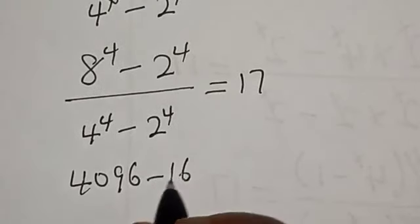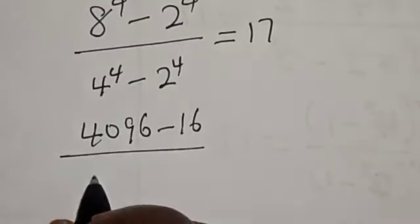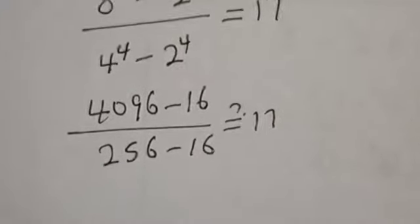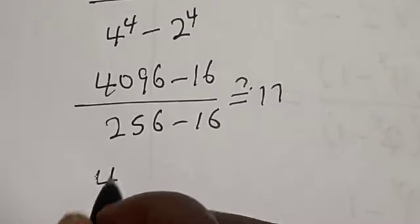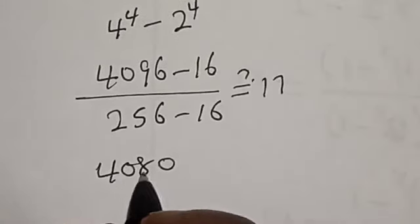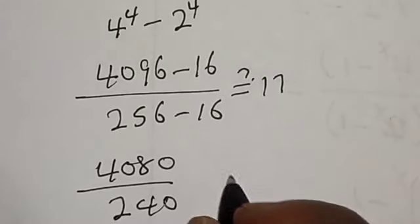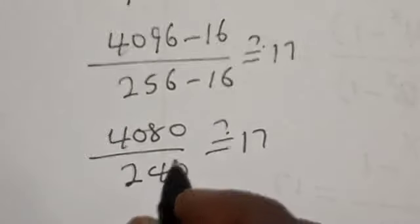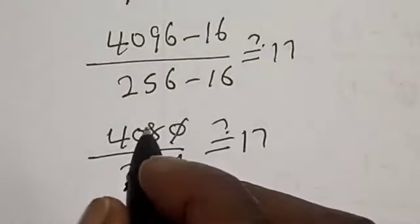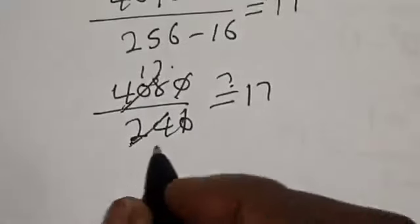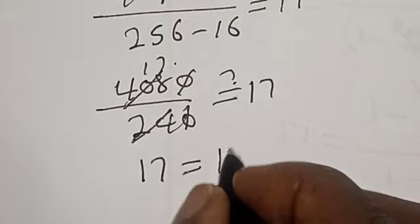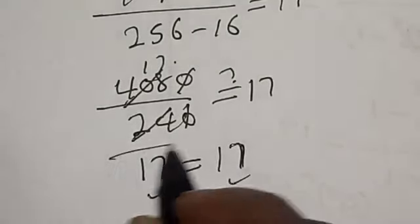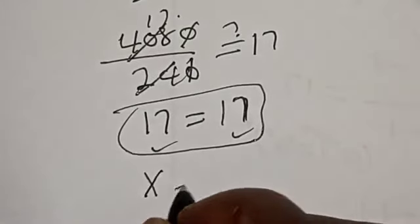4096 minus 16 divided by 256 minus 16 gives 4080 divided by 240, which equals 17. We have 17 equals 17, meaning the left-hand side equals the right-hand side. We have satisfied the given equation at s equals 4.